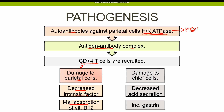There is lack of vitamin B12 absorption, resulting in vitamin B12 deficiency, which gives rise to megaloblastic or pernicious anemia, neuropathies, and atrophic glossitis. Moreover, the chief cells are present in close proximity to parietal cells, and hence the CD4 T cells also damage the chief cells.